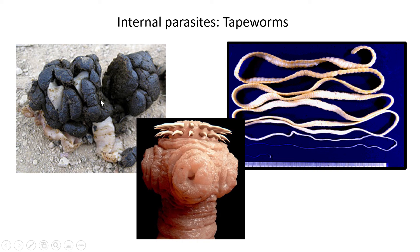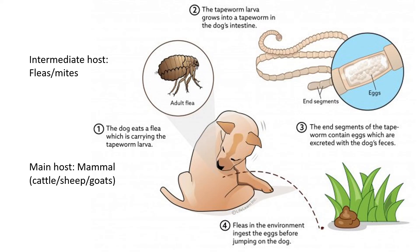Here is the tapeworm life cycle — a simplified version. The worm is inside the host's intestine; through feces the proglottids are released along with eggs. In this case the intermediate host is the flea, which ingests the eggs. When the flea goes onto another host and bites it, the eggs pass into the new main host through saliva. An enlarged picture shows what one of these proglottids or segments looks like, with the eggs inside.